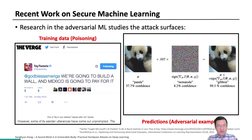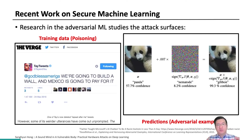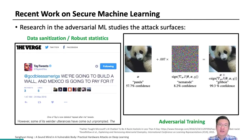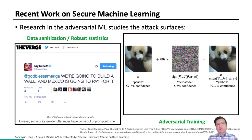By studying those attack surfaces, we come up with certified defenses which provide mathematically provable guarantees, such as data sanitization or robust statistics against poisoning, or adversarial training or randomized smoothing against adversarial samples.